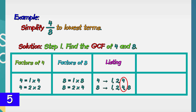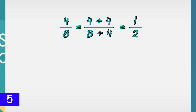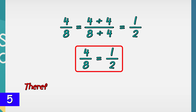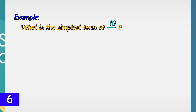The GCF of 4 and 8 is 4. The next step is to divide both the numerator and denominator by 4. 4 divided by 4 is 1, and 8 divided by 4 is 2. Therefore, the simplest form of 4/8 is 1/2.